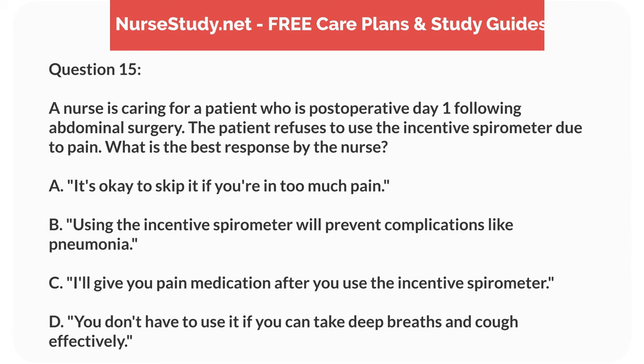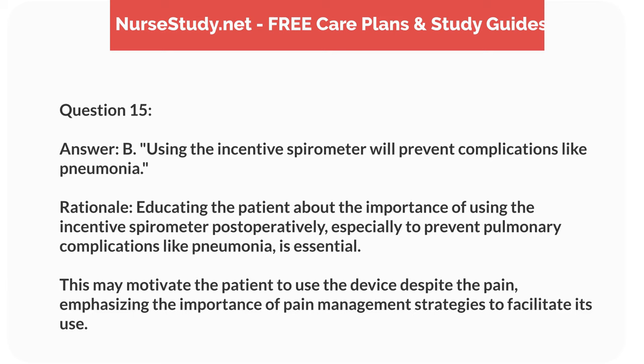Question 15. A nurse is caring for a patient who is postoperative day 1 following abdominal surgery. The patient refuses to use the incentive spirometer due to pain. What is the best response by the nurse? A. It's okay to skip it if you're in too much pain. B. Using the incentive spirometer will prevent complications like pneumonia. C. I'll give you pain medication after you use the incentive spirometer. D. You don't have to use it if you can take deep breaths and cough effectively. Answer: B. Using the incentive spirometer will prevent complications like pneumonia. Rationale: Educating the patient about the importance of using the incentive spirometer postoperatively, especially to prevent pulmonary complications like pneumonia, is essential. This may motivate the patient to use the device despite the pain, emphasizing the importance of pain management strategies to facilitate its use.